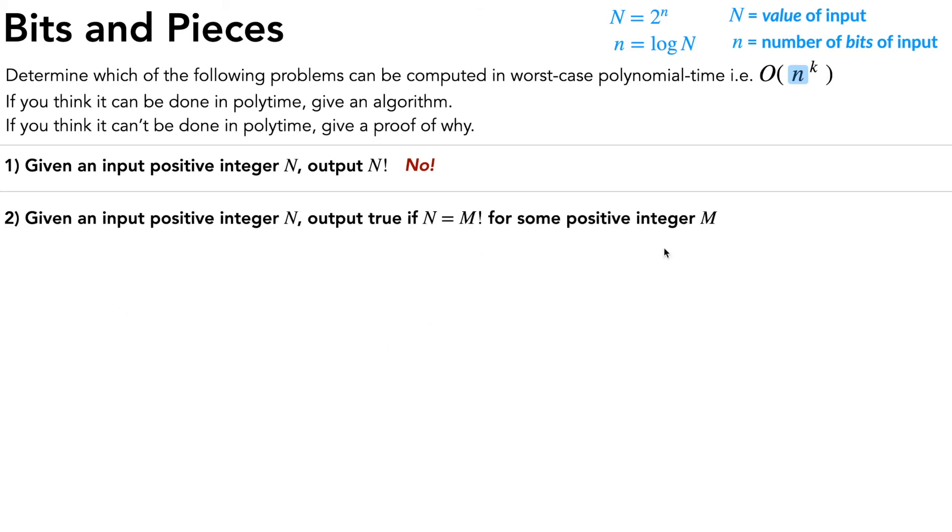Alright, let's move on to problem two. Given an input positive integer N, output true if N is equal to M factorial for some positive integer M.